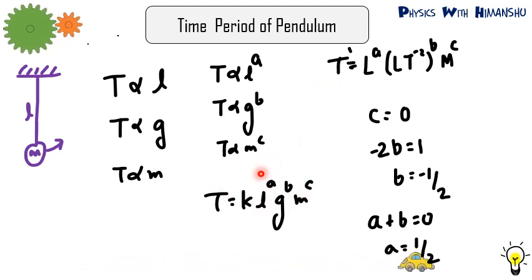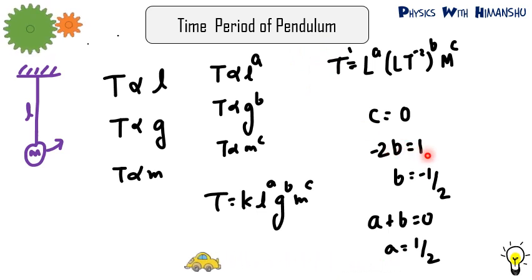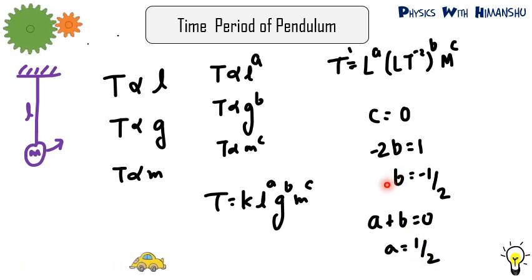Substituting dimensions: T on the left; K is dimensionless; L raised to A; G has dimension L T minus 2 raised to B; M raised to C. Comparing powers of M: there is no M on the left-hand side, so C equals 0. Comparing powers of T: minus 2B equals 1, so B equals minus one-half. Opening the bracket for L gives L raised to A plus B, and since there is no L on the left, A plus B equals 0, giving A equals one-half. This is how you derive the dimensional formula for different physical quantities.